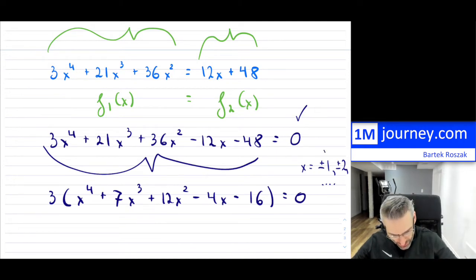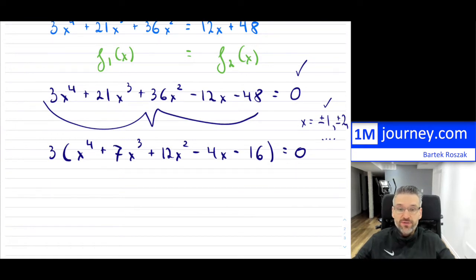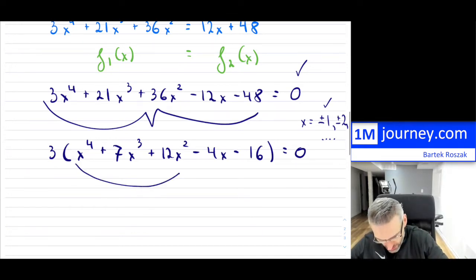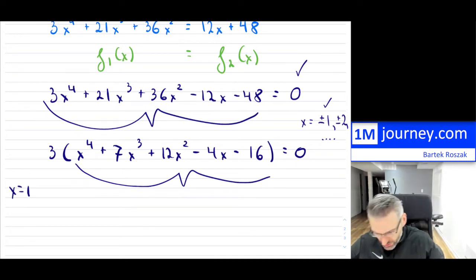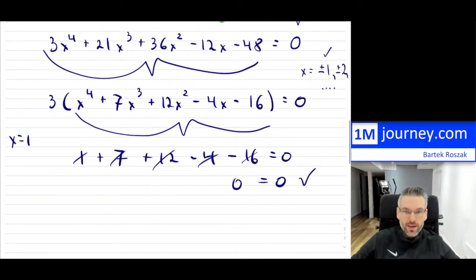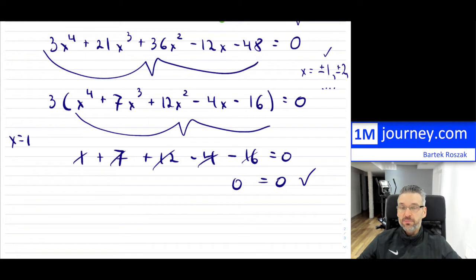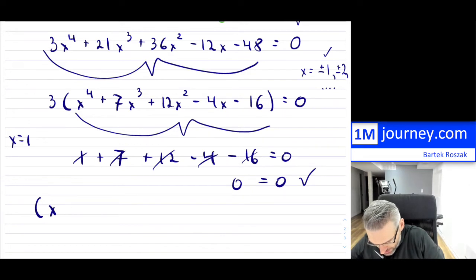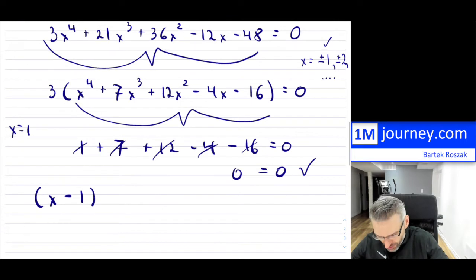Now let me substitute within the polynomial. I'll start with x = 1. Zero definitely won't work because substituting zero won't give a remainder of zero. After substituting x = 1, it actually worked — so one is a zero of this polynomial. That means if I graphed this, one of the zero-crossings would happen at x = 1. So I know that (x − 1) must be a factor of the original polynomial.